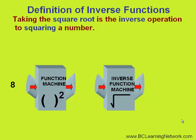We'll demonstrate with the number 8 below. First, we'll put our 8 into the function machine that squares the number. When 8 is squared, you get a perfect square of 64. Next, we'll put it into our inverse function machine that does the opposite of squaring — it will take the square root of the number. And when we take the square root of 64, we get 8, the number we started with.